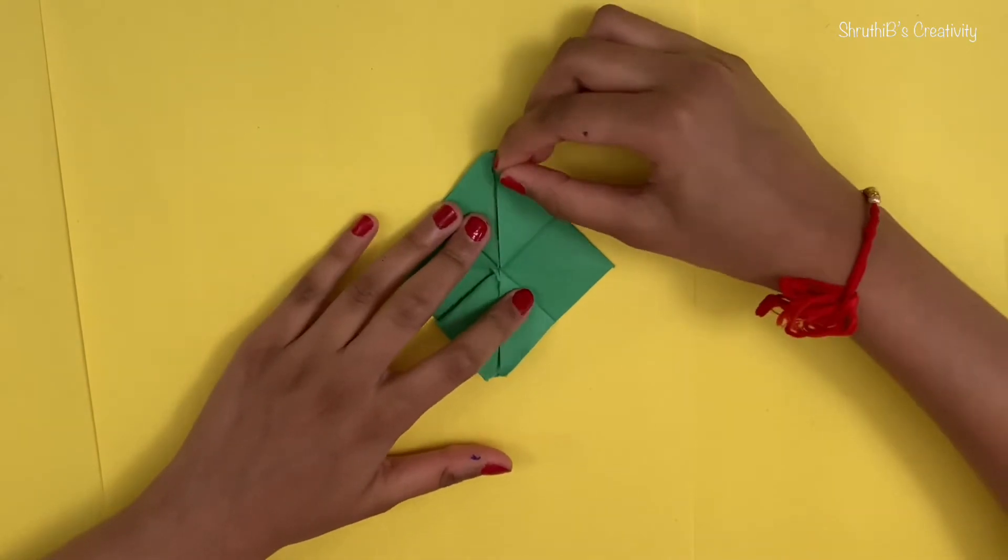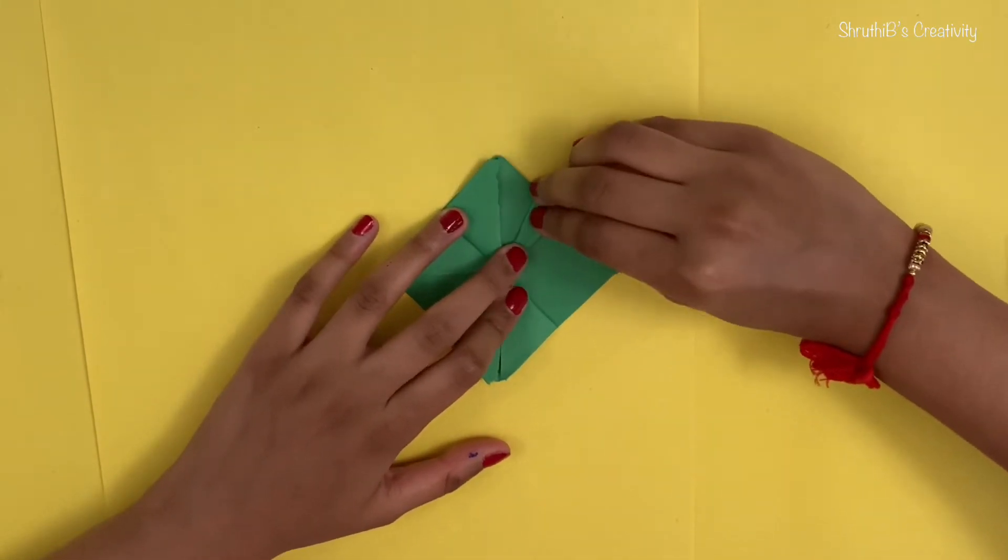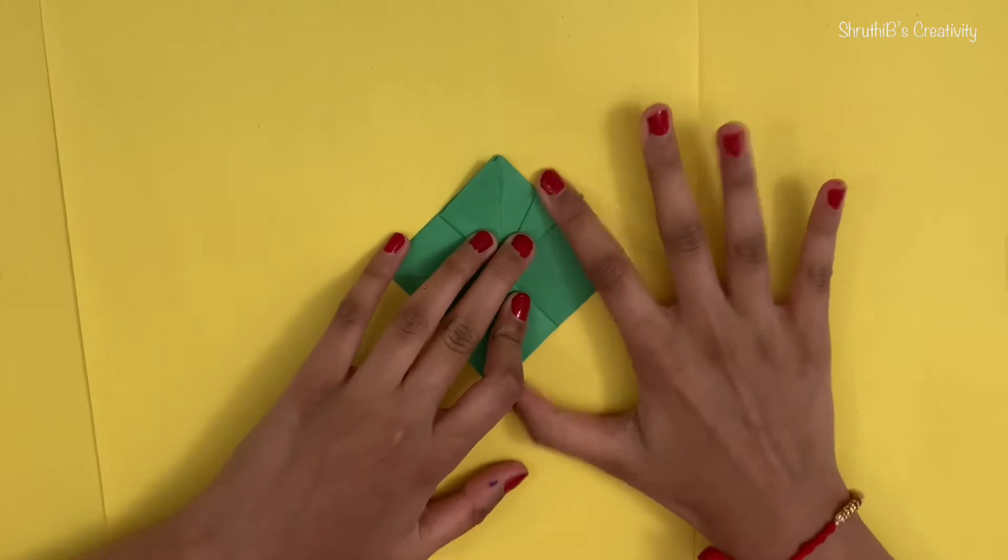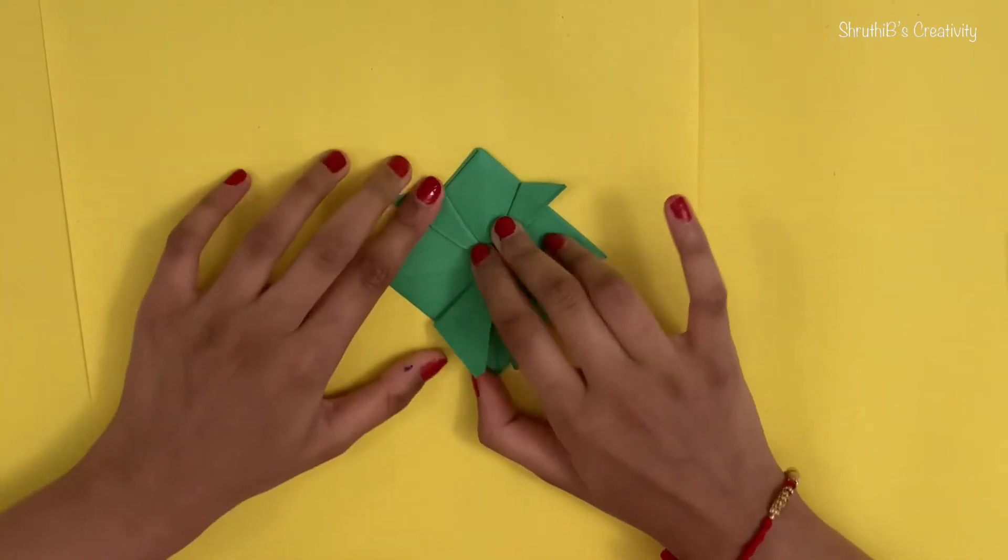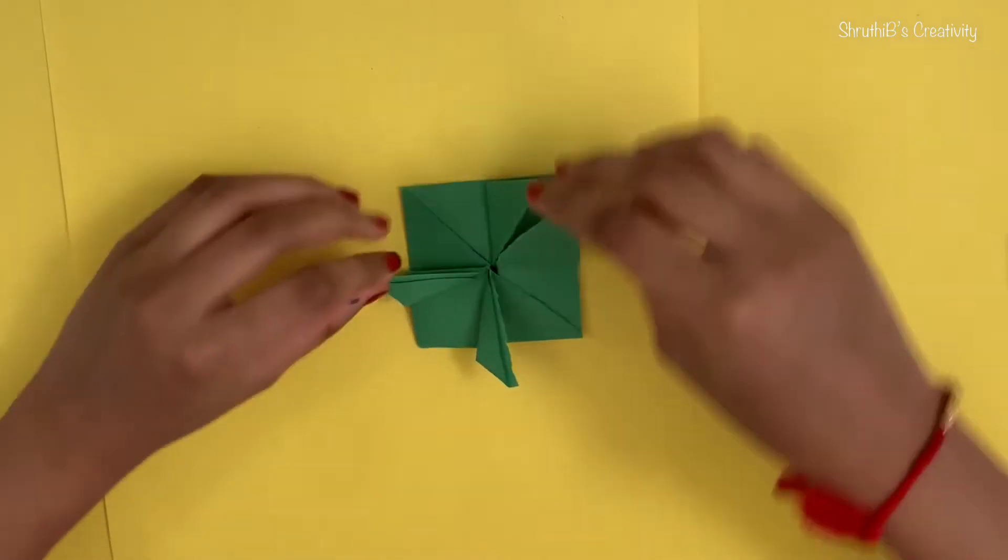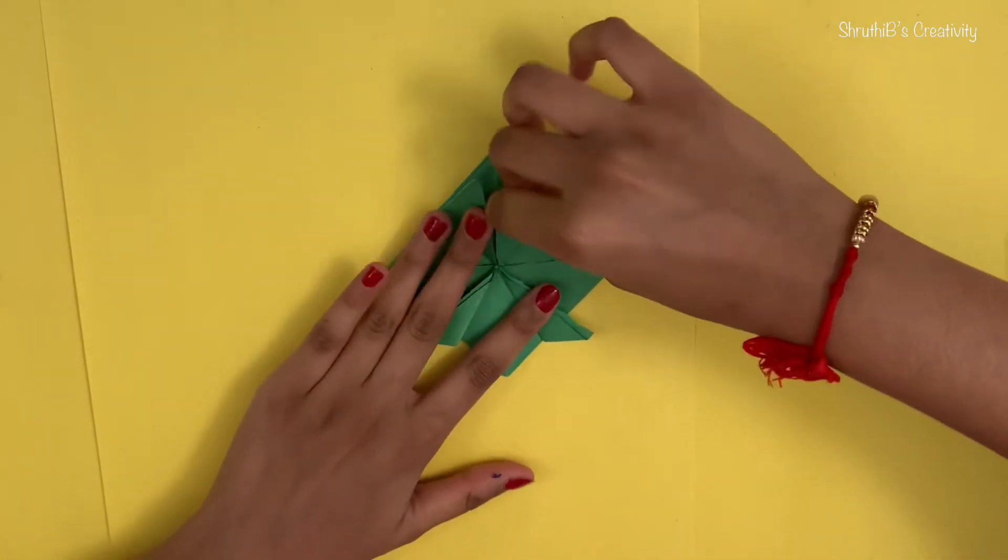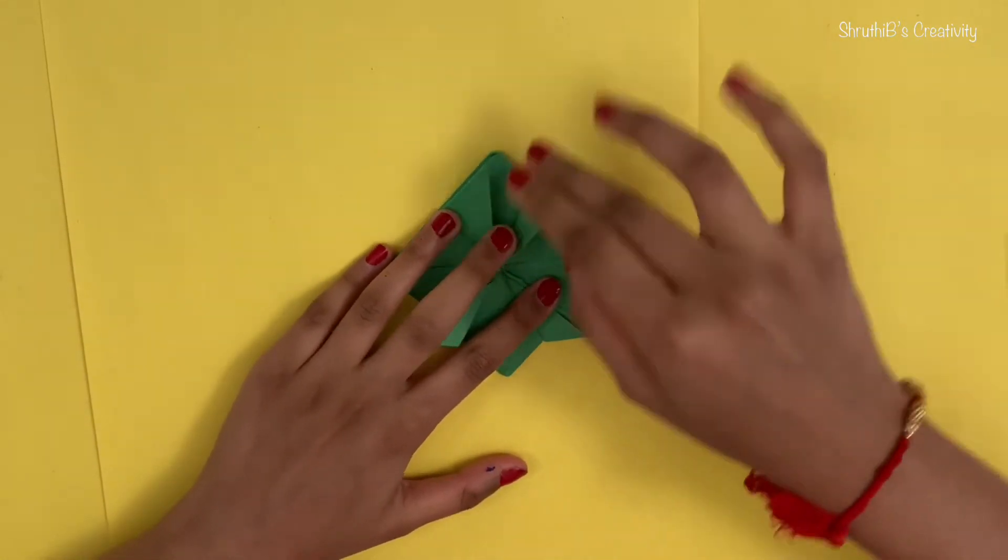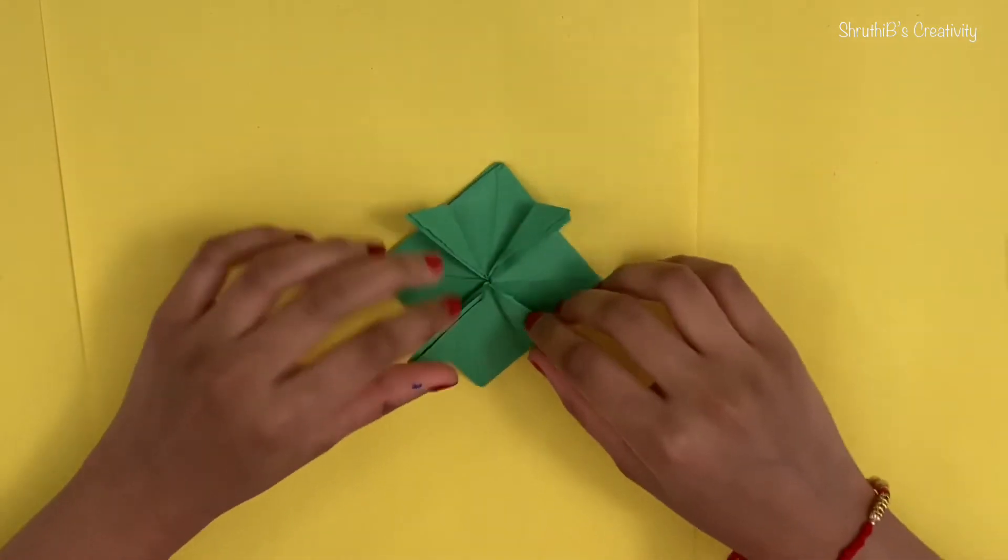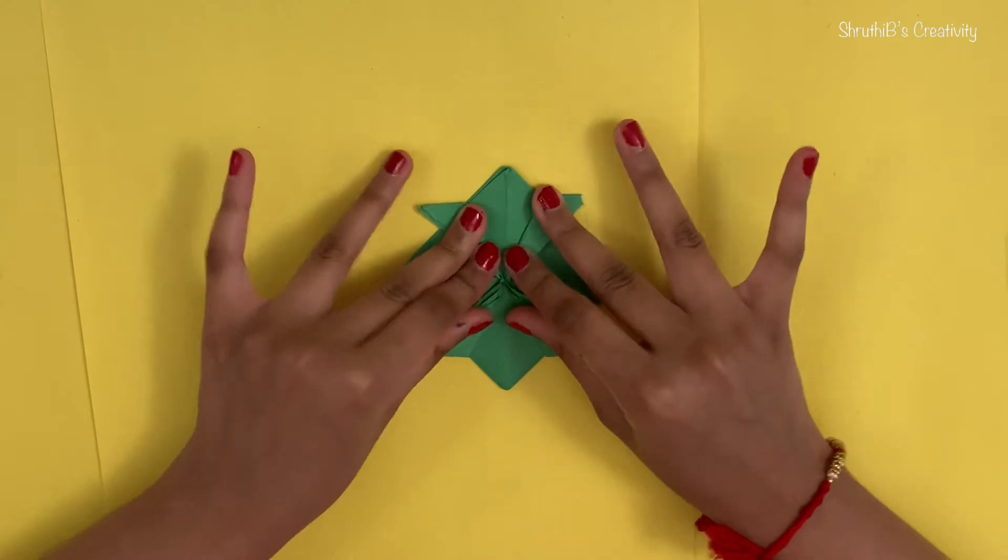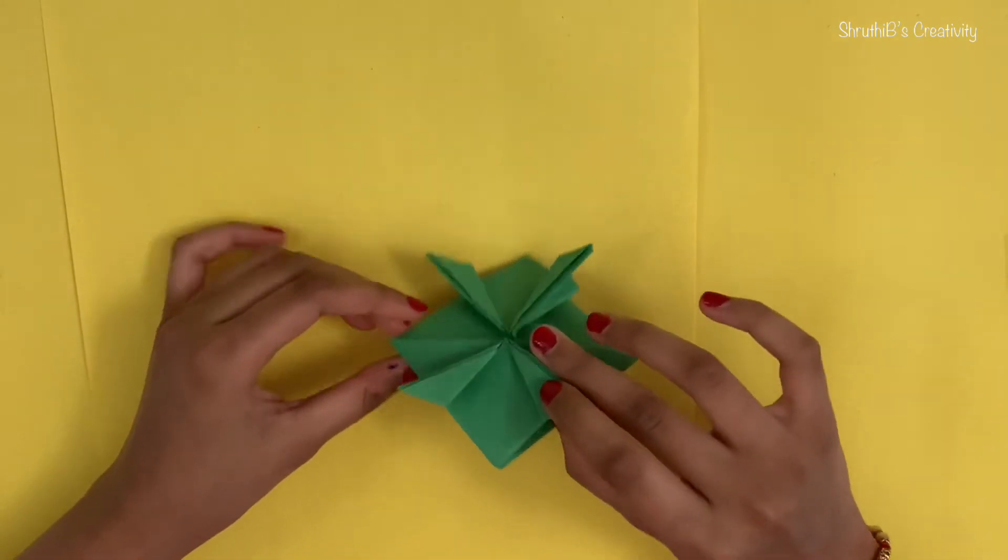So we're going to take this tip of the corner and we're going to just do this, just fold it like this. So right now it must be looking like some sort of a bug or something, but seriously, we have more steps.